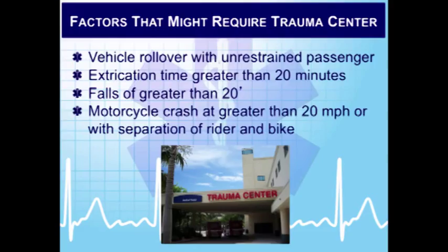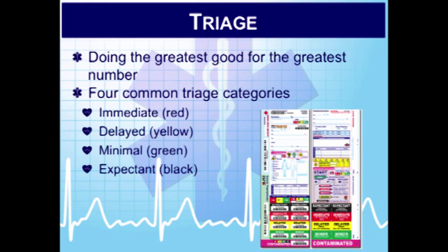Triage was started by a French person — basically we want to do the greatest good for the greatest number of patients. There are a number of different triage systems out there — SALT triage, START triage, and others. We basically have four categories: Immediate (red) impacts the airway, breathing, and circulation — head trauma patients in shock who may die if we don't intervene. Yellow are serious but stable, often orthopedic and back injuries. Minimal patients (green) are the walking wounded, and Expectant (black) are those who will die regardless of resources available. We need to remember that a patient can change from green or yellow to red.